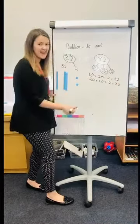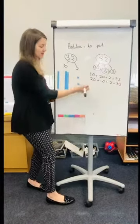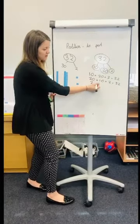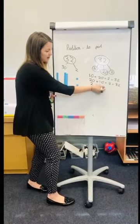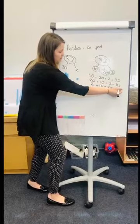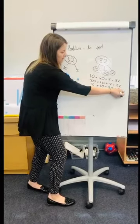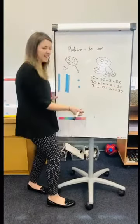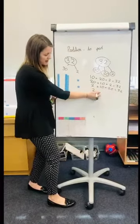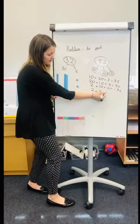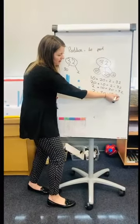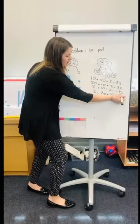And then I'm going to move the 2 to the front of the sentence, and I'm going to do: 2 add 10 add 20 equals 32. And then I'm going to swap my 10 and 20 over, and do: 10 add 20 equals 32.